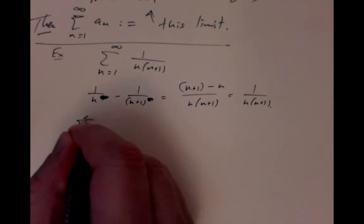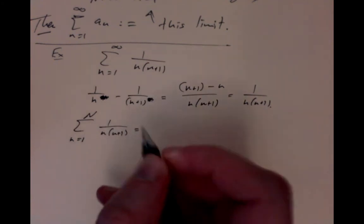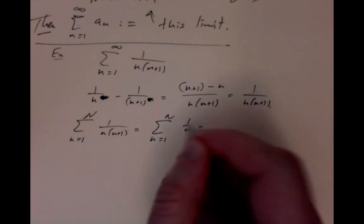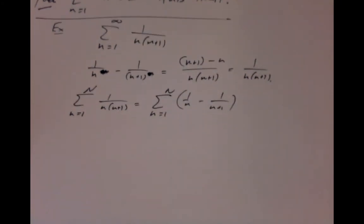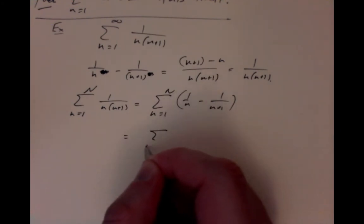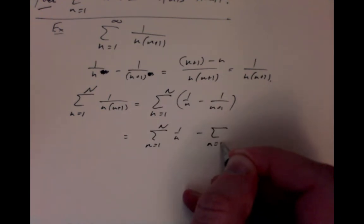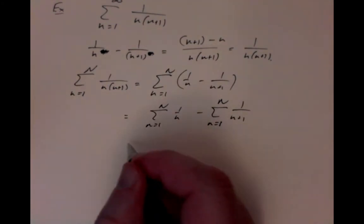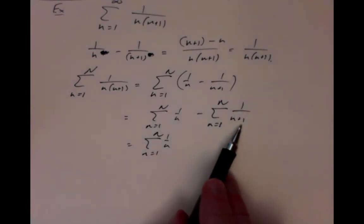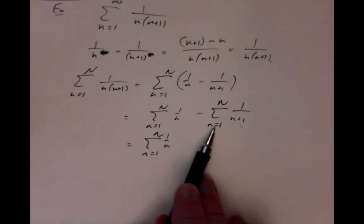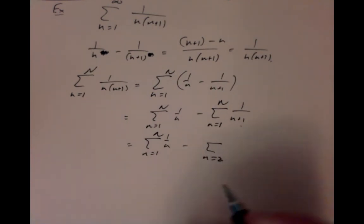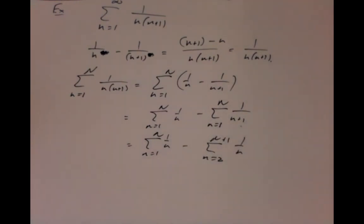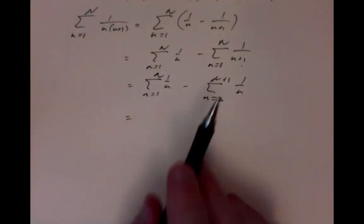If you take the partial sums, 1 to capital N, 1 over n times n plus 1, you get, by using this identity here, you get the sum n equals 1 to capital N, 1 over n minus 1 over n plus 1. That gives you the sum n equals 1 to capital N, 1 over n minus the sum n equals 1 to capital N, 1 over little n plus 1. Those are basically the same sum. I'm just going to write this in terms of n plus 1 instead of n. So n equals 1 to n, 1 over n. Now if I change this term, n plus 1, this starts at 1, little n is 1, this starts at 1 over 2. So let's try and start it at 2. And then when n, little n is capital N, you get capital N plus 1. So let's make it end at capital N plus 1, 1 over n.